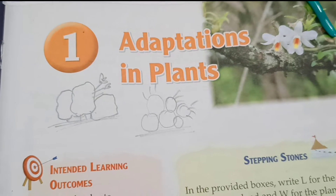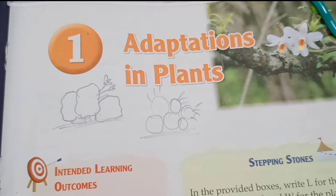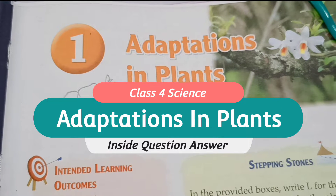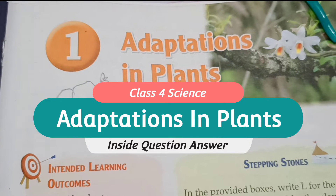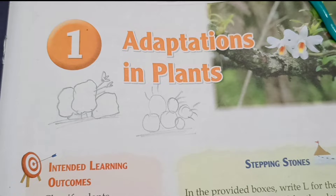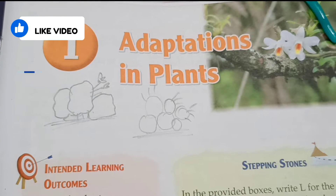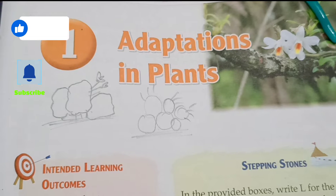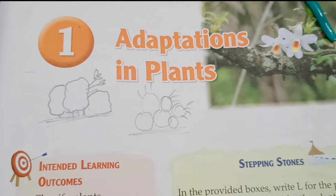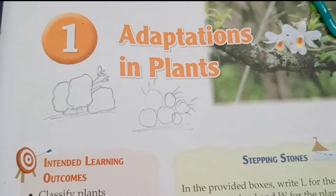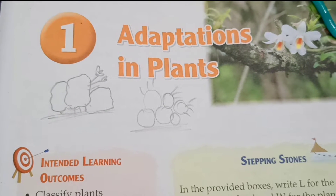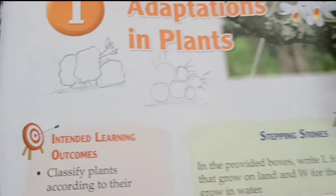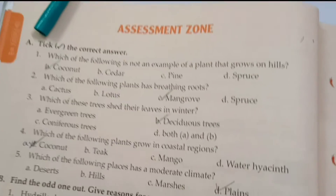Hello students, welcome to West Bengal English Medium Guide. Today we are going to solve Chapter 1: Adaptations in Plants from Class 4 Science book. Before we start, please like the video, subscribe the channel, and press the bell icon to get further notifications. If you missed any video, please check out the description box or playlist. Let's start the chapter Adaptations in Plants.